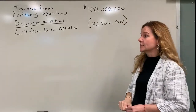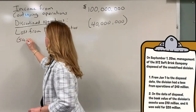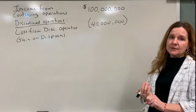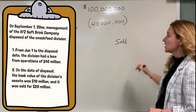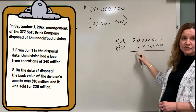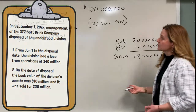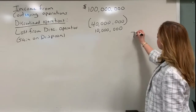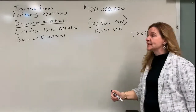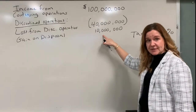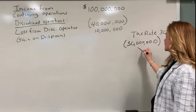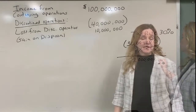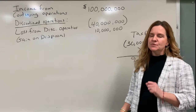The next part is the gain on disposal. When we dispose of the snack food segment, we compare the book value of the assets to how much we're selling it for. I sold it for $20 million and the book value was $10 million, giving a gain of $10 million — brought in as a positive. Now for the tax effect at a 30% rate: netting the negative $40 million and the positive $10 million gives negative $30 million. Multiplying by 30% gives $9 million. Because it's a loss, losses are tax deductible, so this is a tax benefit — recorded as a positive number.